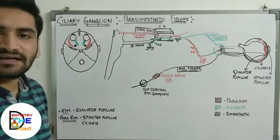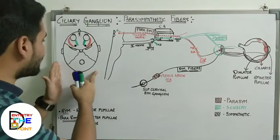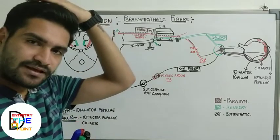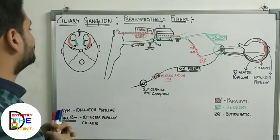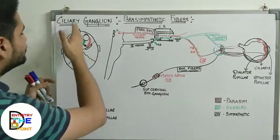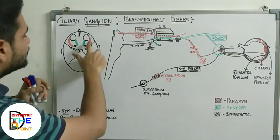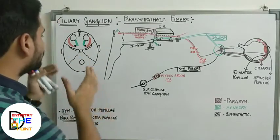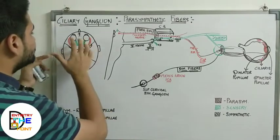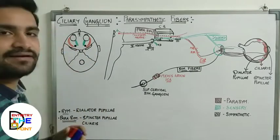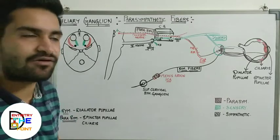Let's start with the location of the ciliary ganglion. Looking at the diagram from a superior aspect - if we remove the cranial vault and visualize the superior view of the skull - we can see the two orbits, the midline with the nose, the two ears, the foramen magnum, and the lesser and greater wings of the sphenoid. The ciliary ganglion is present just behind the orbit, at the apex of the orbit.